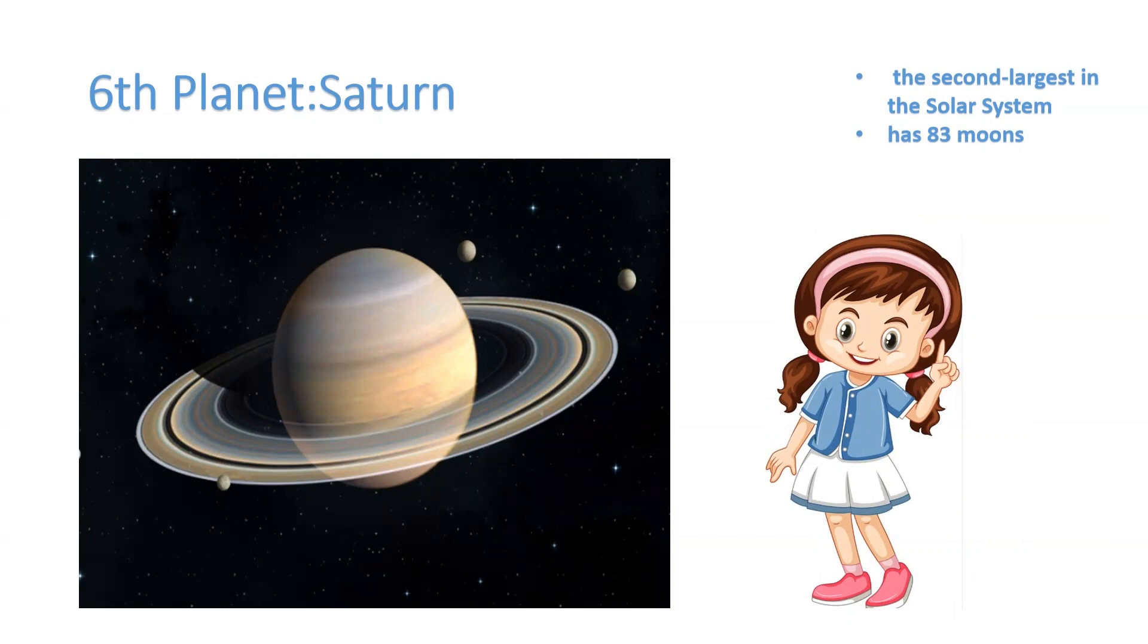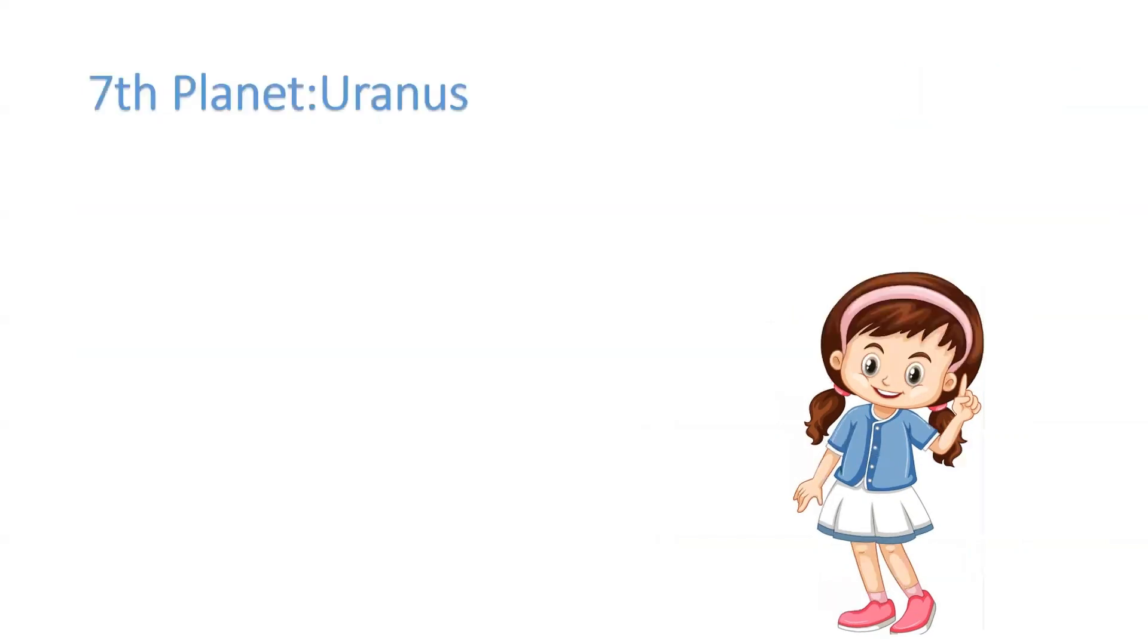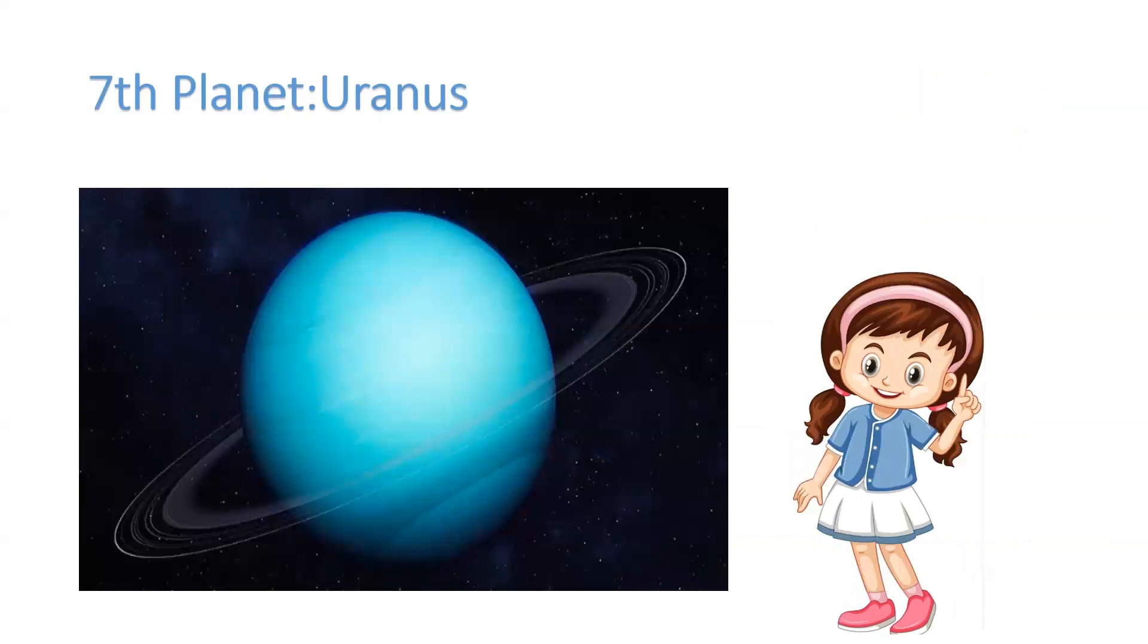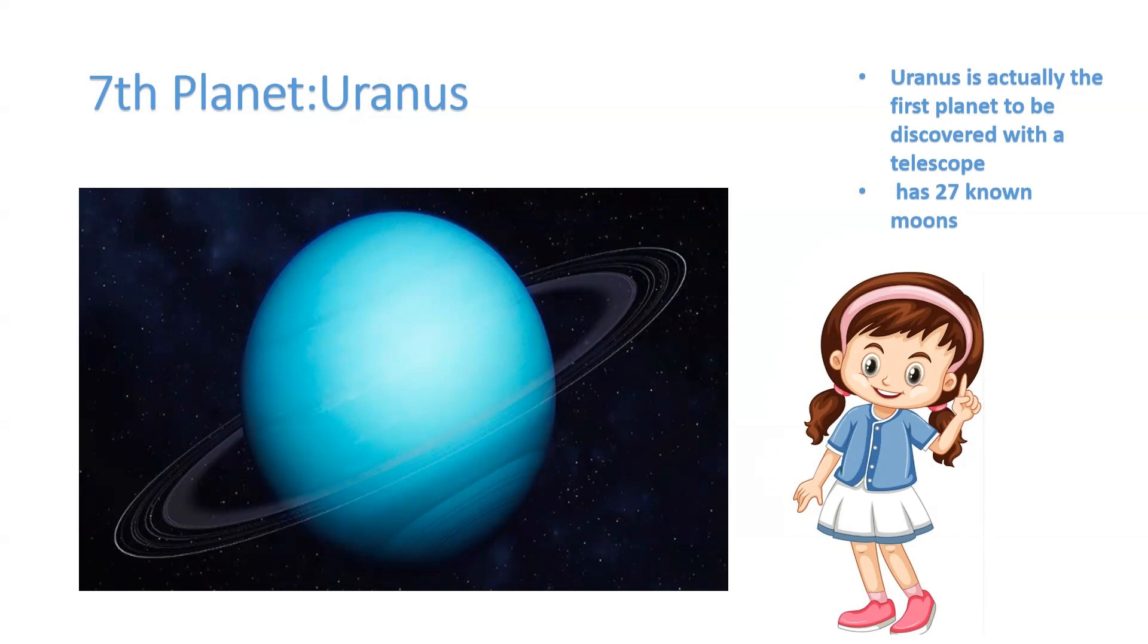Now, let's move to the seventh planet, Uranus. Did you know Uranus also has some rings and it has the beautiful blue color? Uranus is actually the first planet to be discovered with a telescope, and it has 27 known moons.